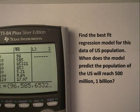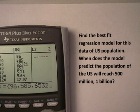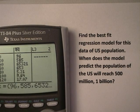Use the calculator to determine a best fit regression model for some data. This data happens to be data of the historical population of the U.S. And once we find the regression model, we're going to answer some questions. When does the model predict the population of the U.S. will reach 500 million and 1 billion?